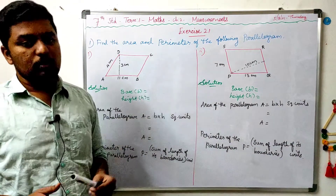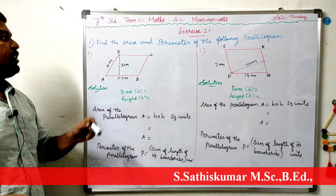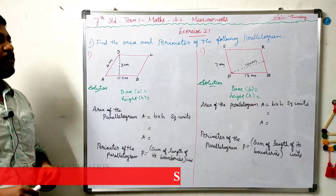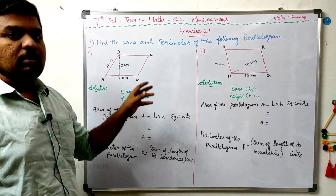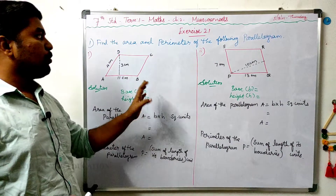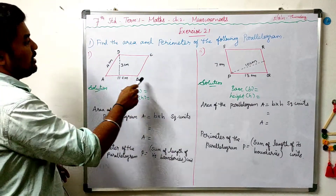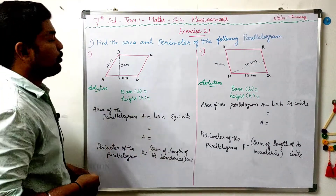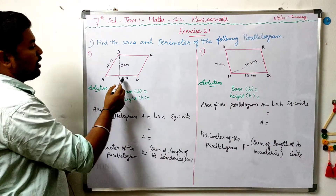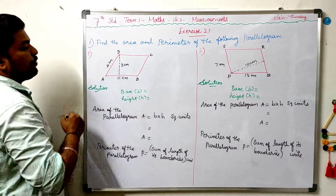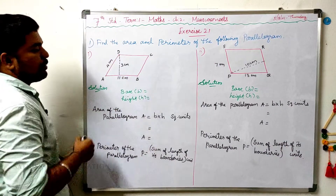That is the first question: find the area and perimeter of the following parallelogram. In the first one, you have a parallelogram where the base is 11cm, the other side is 4cm, and the height of the parallelogram is 3cm.